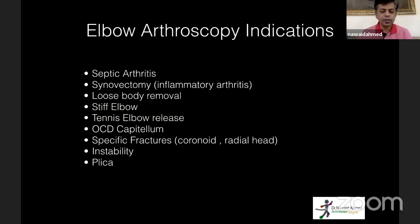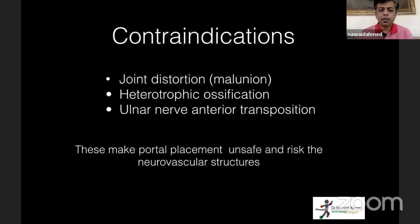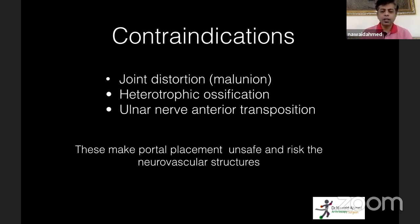Indications also include tennis elbow refractory to conservative treatment, osteochondritis dissecans of the capitulum, specific fractures like coronoid or radial fractures treated arthroscopically, ligament injuries with instability, and pain due to a plica. Absolute contraindications include distorted joint anatomy due to malunion or deformity, heterotopic ossification around the elbow, or a previous history of surgery where the ulnar nerve was transposed anteriorly — all making portal placement unsafe.